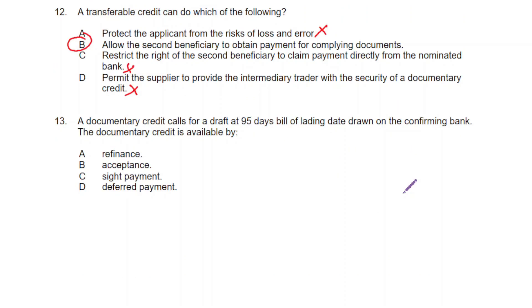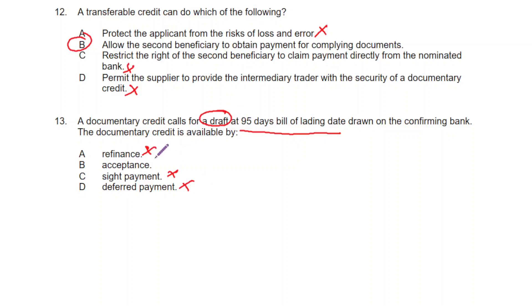Question 13: A documentary credit calls for a draft at 91 days bill of lading date drawn on the confirming bank. Is the documentary credit available by refinance, acceptance, sight payment, or deferred payment? There is no documentary credit available on refinance. It is not sight payment since it is time-based. Deferred payment requires an undertaking, not a draft. Since a draft is involved, the correct answer is B — acceptance.